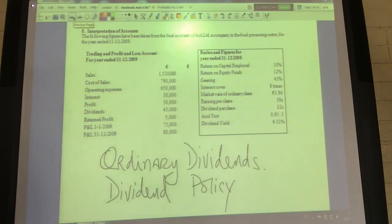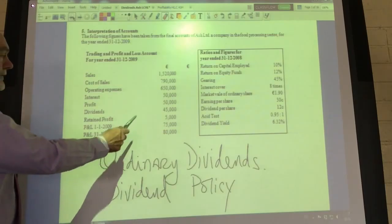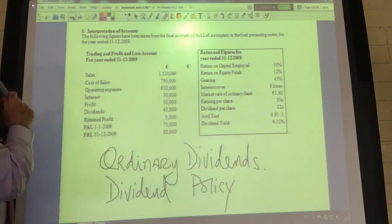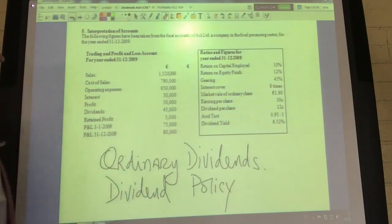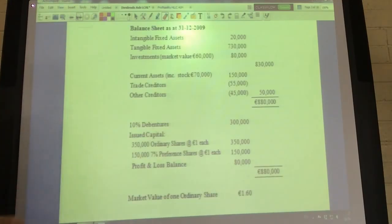We're looking at dividends and dividend policy for Ashram. Looking at the profit appropriation, the company has a profit of 50,000 and is paying 45,000 euro in dividends. Those dividends are being shared among the ordinary shareholders and preference shareholders.